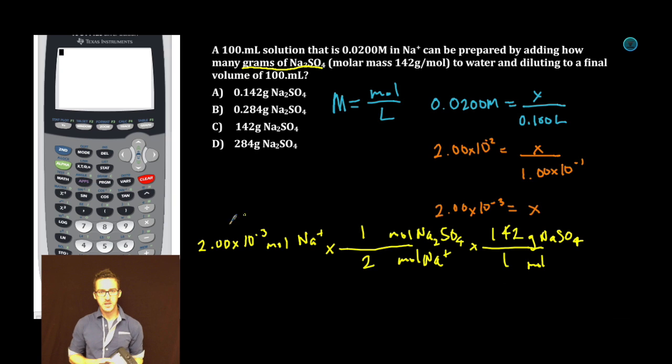Now let's solve this with our noggins. 2 times 10 to the minus 3 times 1 divided by 2. If it's helpful, even for numbers like this, you can just put it in scientific notation. 2 is 2 times 10 to the 0. So 2 divided by 2 is 1 times 10, negative 3.